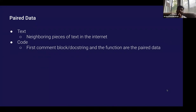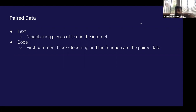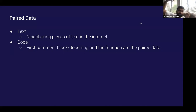Our goal is to train these models with unsupervised data. For text, we use neighboring pieces of text — like neighboring paragraphs, or a sentence in one paragraph and its adjacent paragraph. Those are the positive examples. For code, it's the top comment for a function followed by the code itself. So the paired data basically comes from there.